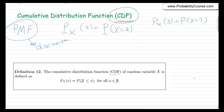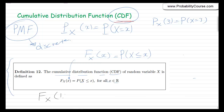So what is the CDF? The CDF, or cumulative distribution function, of a random variable x is defined as follows. It's a function that takes an argument. For random variable x, we show it by F sub x, indicating that this is the CDF of random variable x. At any real value x, this is the probability that x is less than or equal to x. For example, Fx of 1.5 is the probability that the random variable x is less than or equal to 1.5.